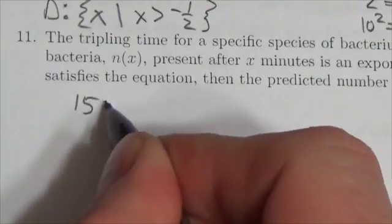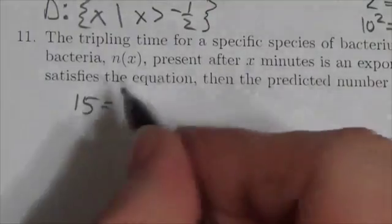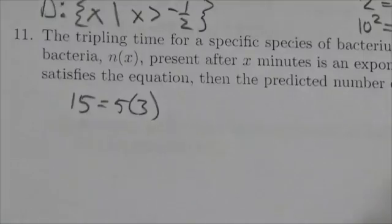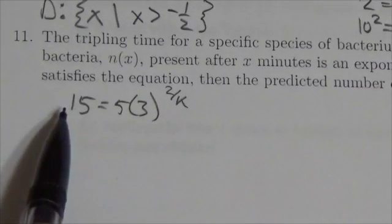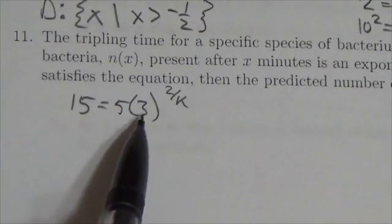So it has a value of 15 when the independent variable is 2. And this is 15 equals 5 times 3 to the 2 over k.